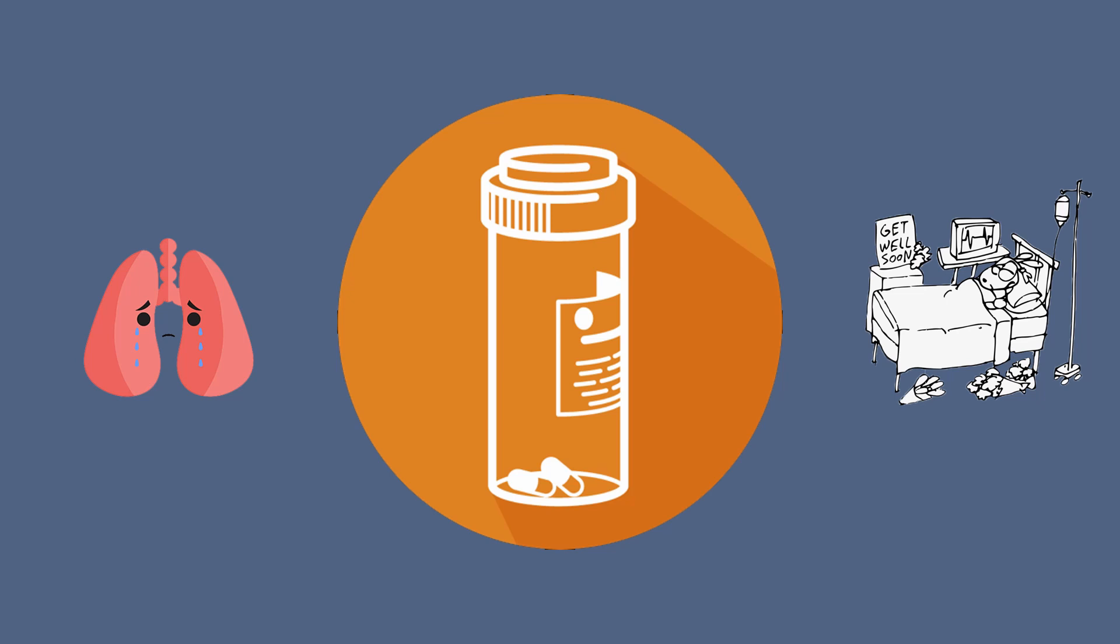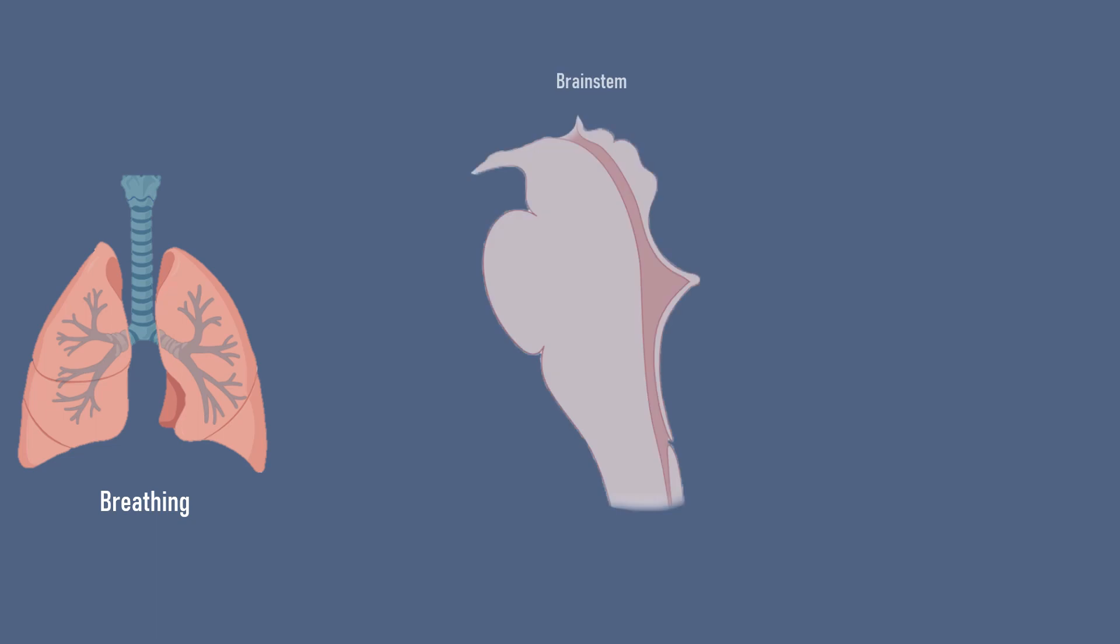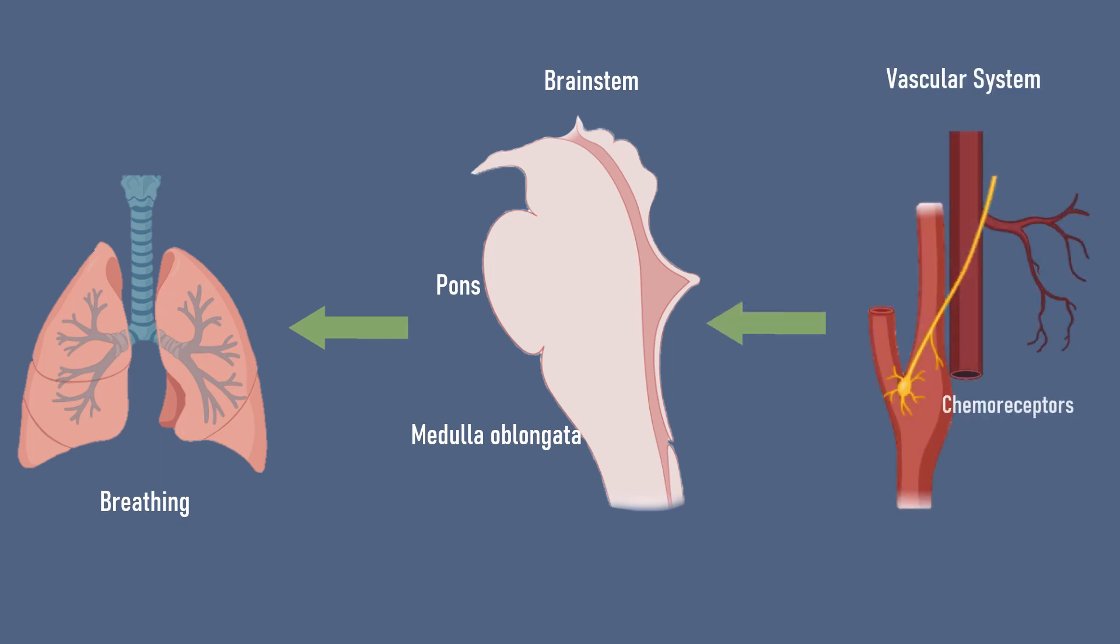Let's take a look at breathing for example. Breathing, also known as respiration, is controlled by the medullary respiratory centers, which are located in the medulla oblongata and pons. The respiratory center gets information about oxygen and carbon dioxide levels in the blood via chemoreceptors, which are located in the vascular system.